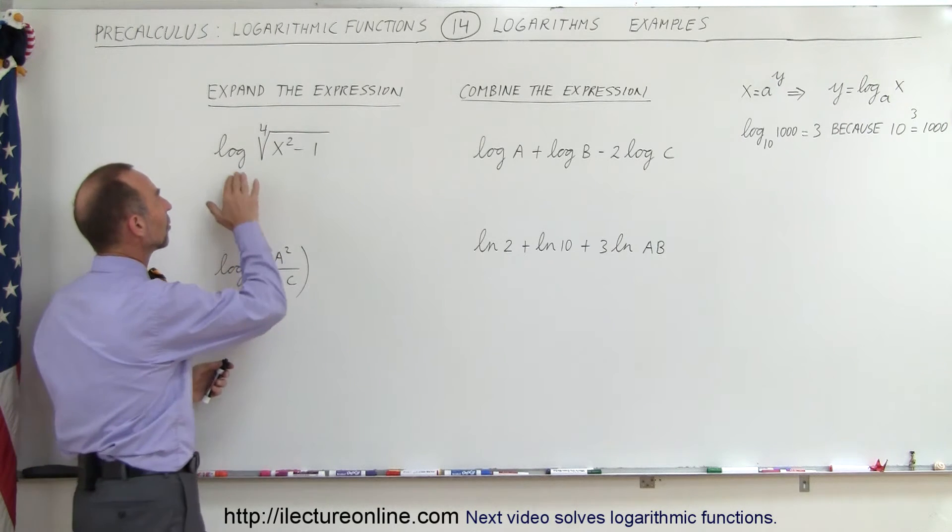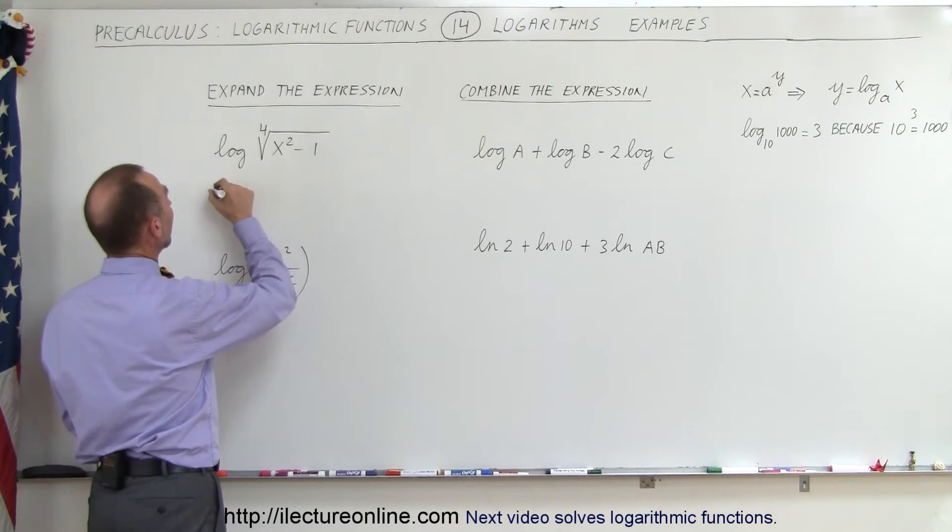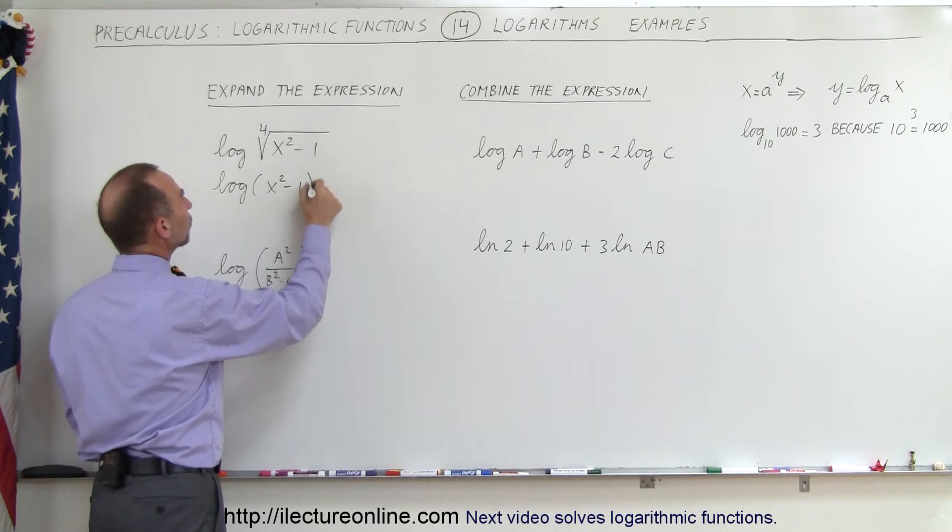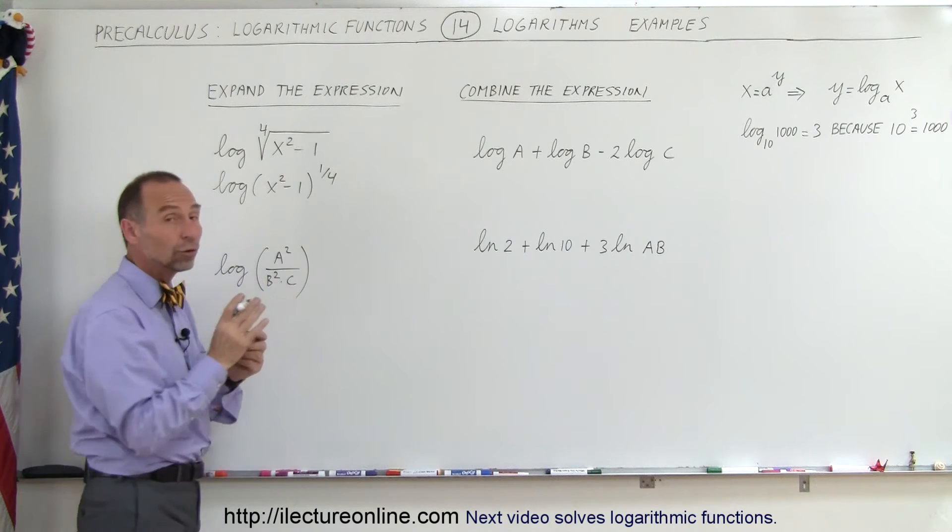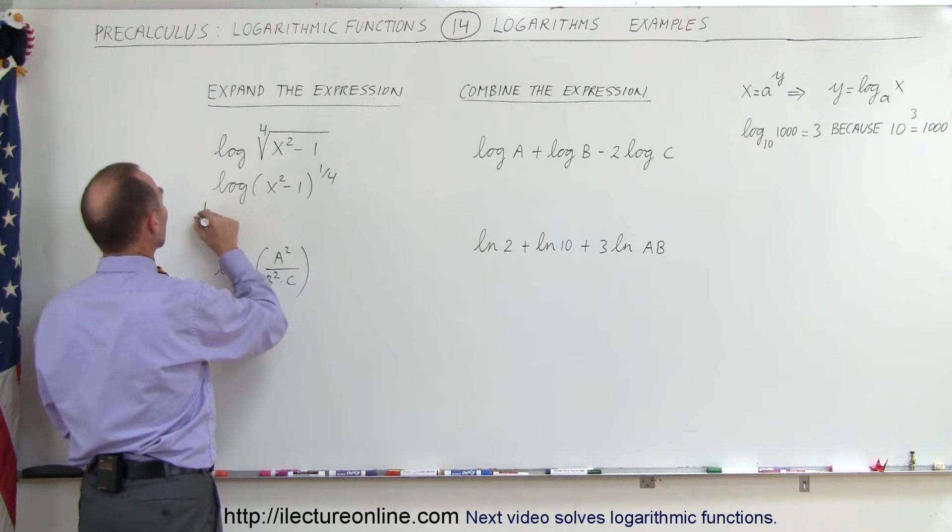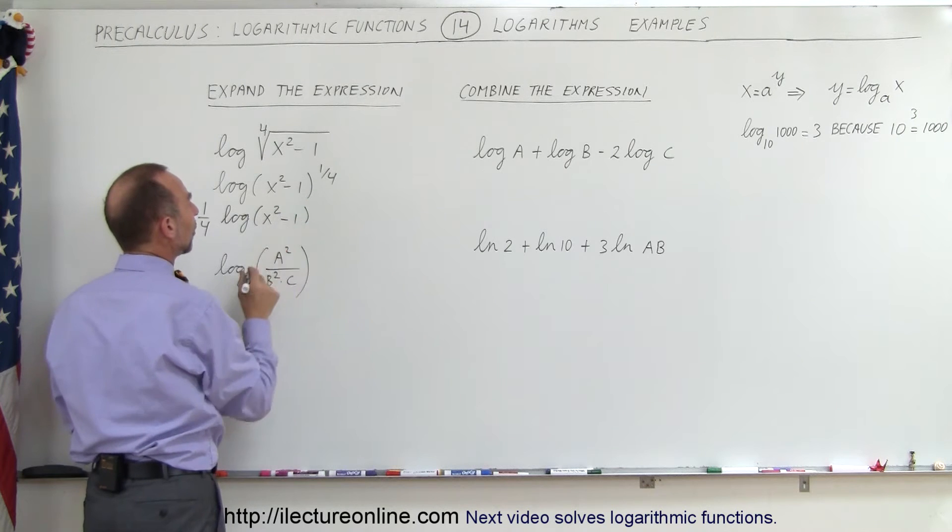So here we have the log of the fourth root of x squared minus one. So this could be written as the log of the quantity x squared minus one to the one-fourth power. And then we use the rules of logarithms to take that and put it in front so this could be written as one-quarter the log of the quantity x squared minus one.